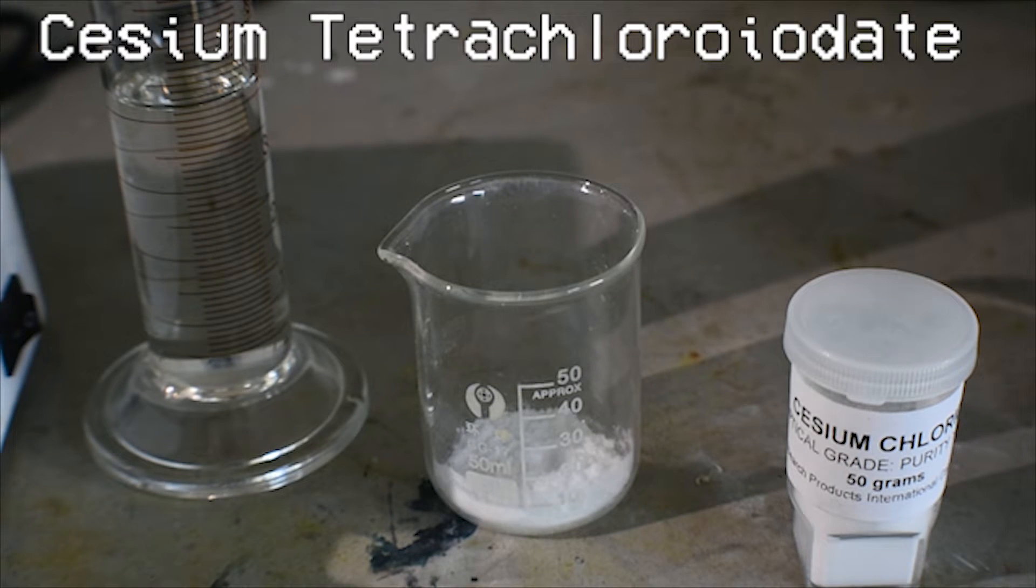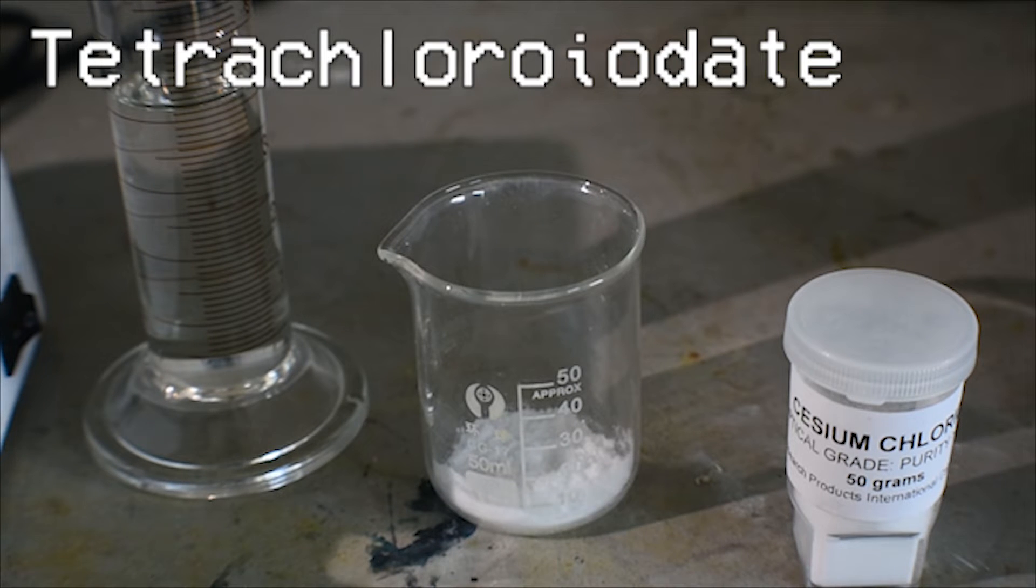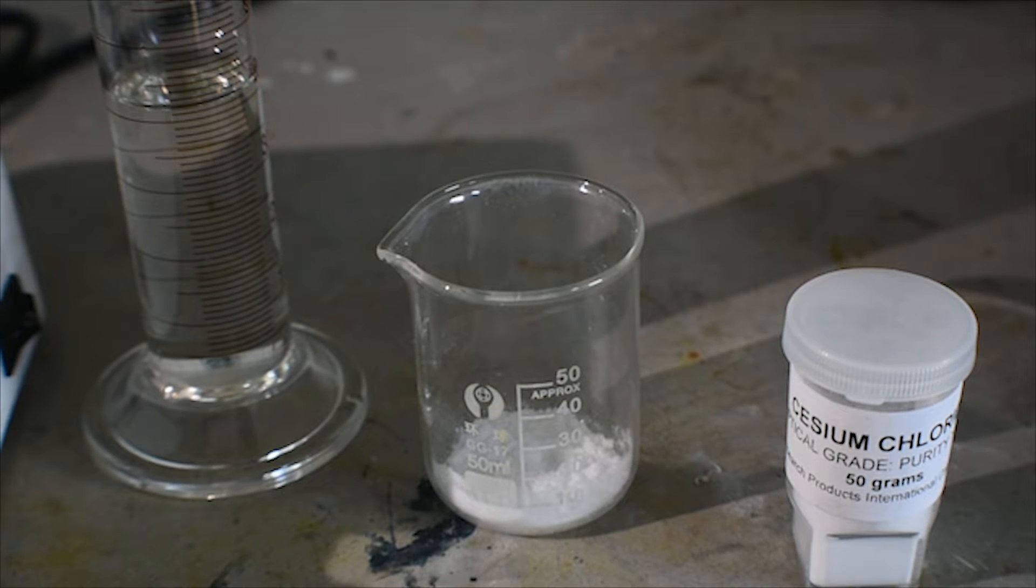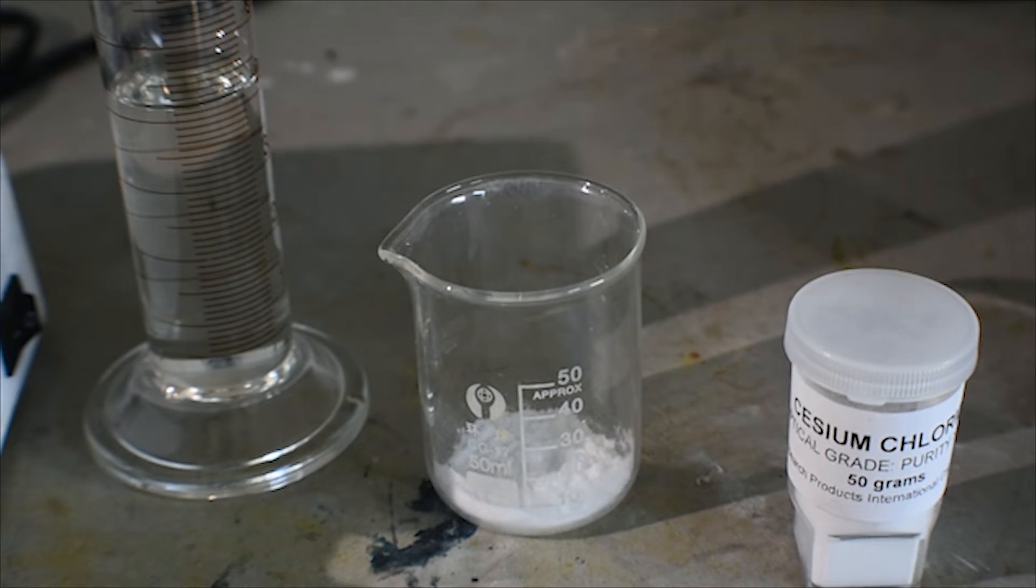This compound is pretty interesting because it contains the tetrachloroiodate ion with the formula ICL4-. This can combine with an ion such as potassium, sodium, rubidium, or cesium to create a salt.